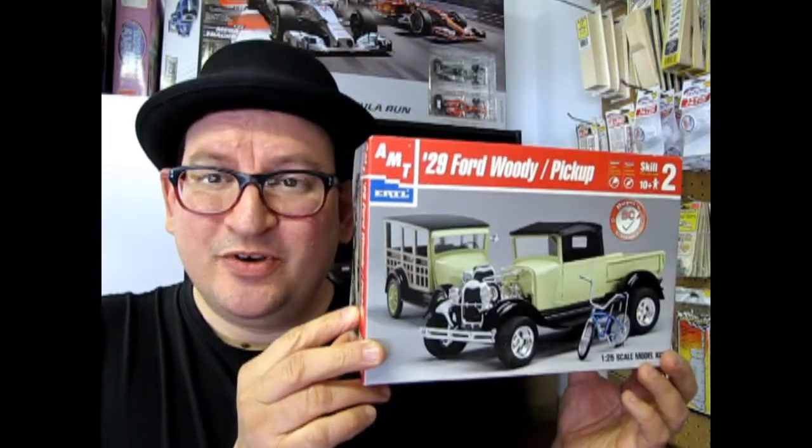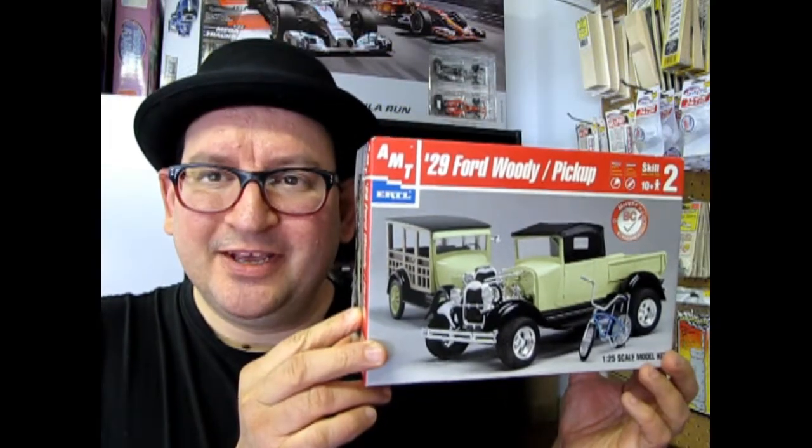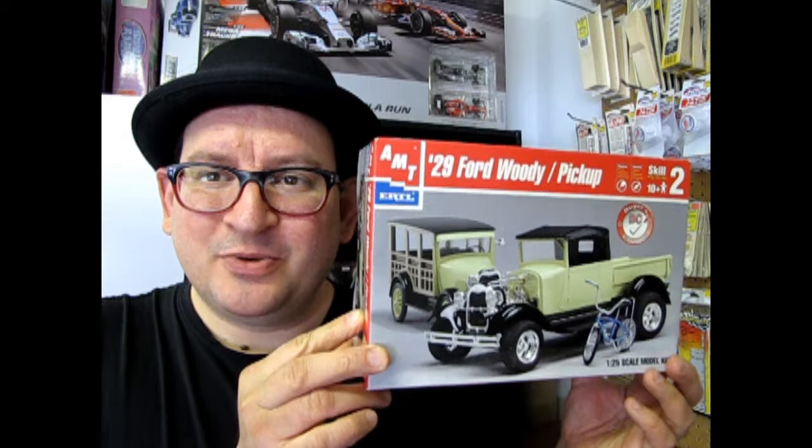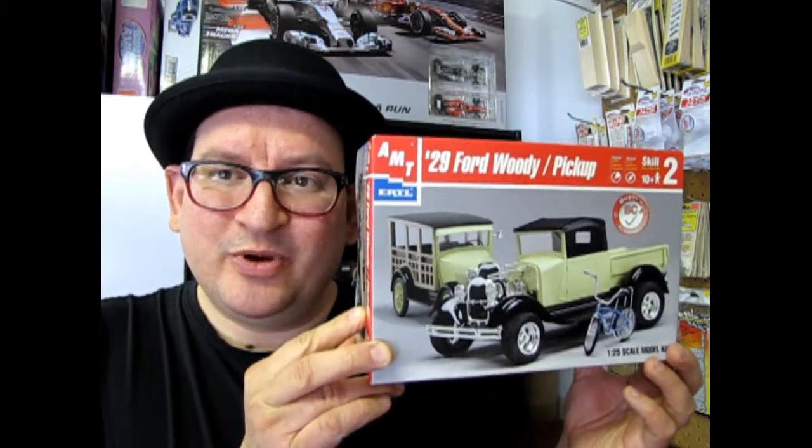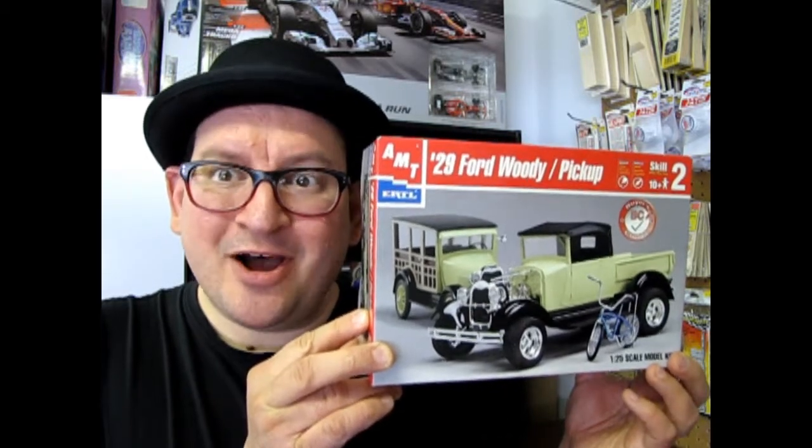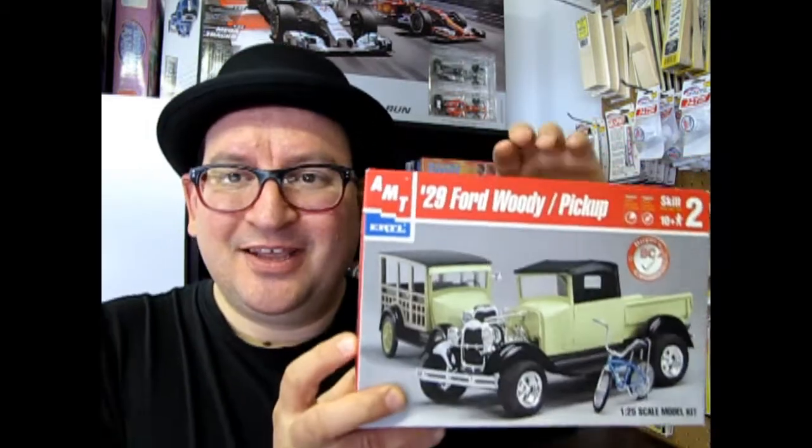We hope you enjoyed that episode of What's in the Box, where we opened up the lid on the AMT Ertl 1929 Ford Woody pickup. Please tune in next week when we open up another box on What's in the Box. And if you like these old Ford episodes, you'll also want to check out these three videos here. Don't forget to subscribe to us down here so that we can continue with this great series of videos. And until next time, we will see you back here again on Monster Hobbies. What's in the Box?